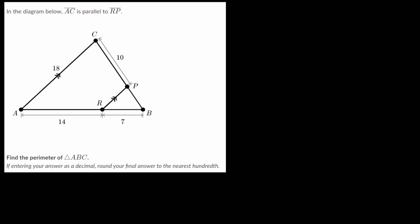In this video, I'd like to continue talking about using similar triangles by looking at a slightly more challenging example. For this problem, we're told that line segment AC is parallel to line segment RP in the diagram below, denoted by these double arrows on each of these lines. We need to find the perimeter of triangle ABC, which is the bigger triangle. The only measurement we don't know is line segment PB, and we'll call it X. We'll set up an equation to figure out what X is.